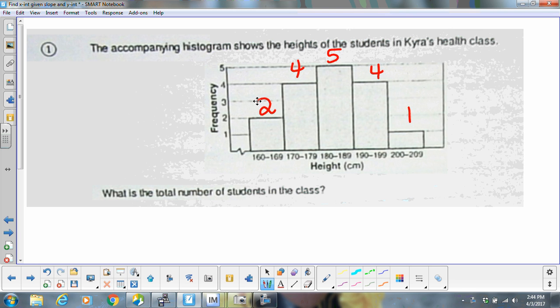So 2 plus 4 is 6. 6 plus 5 is 11. 11 plus 4 is 15 and 15 plus 1 gives us 16.